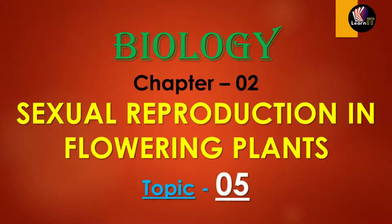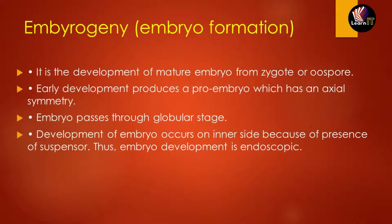Hello friends, welcome to one more new video of Learn It. In this video we'll be talking about topic 5 of chapter 2, which is sexual reproduction in flowering plants. Let us talk about the first topic, which is embryogeny, also known as embryo formation. The basic definition is that it is the development of a mature embryo from a zygote.